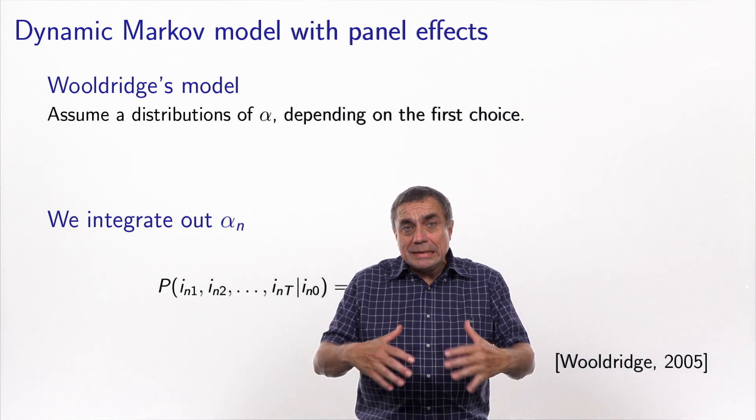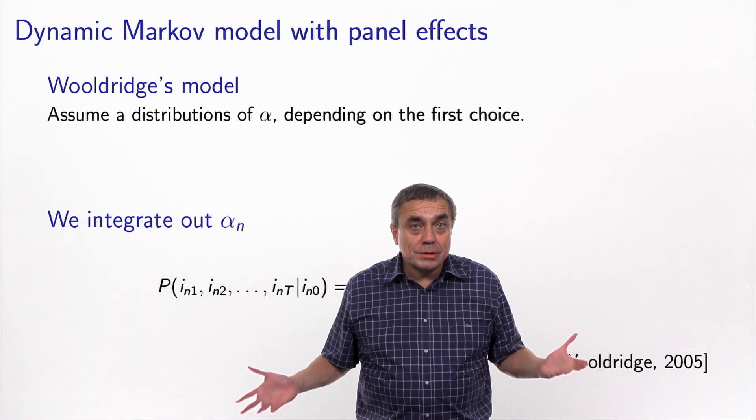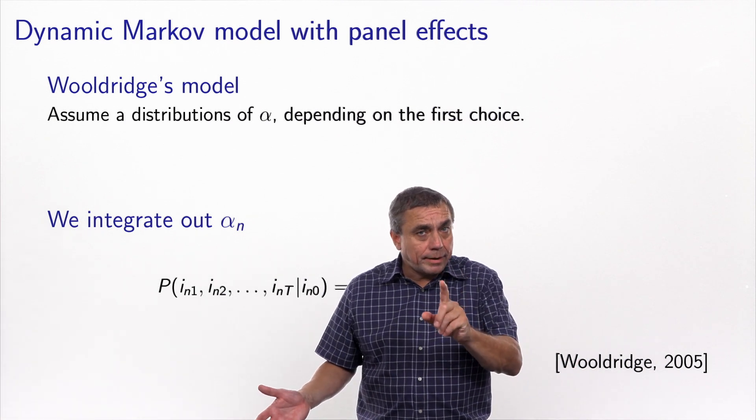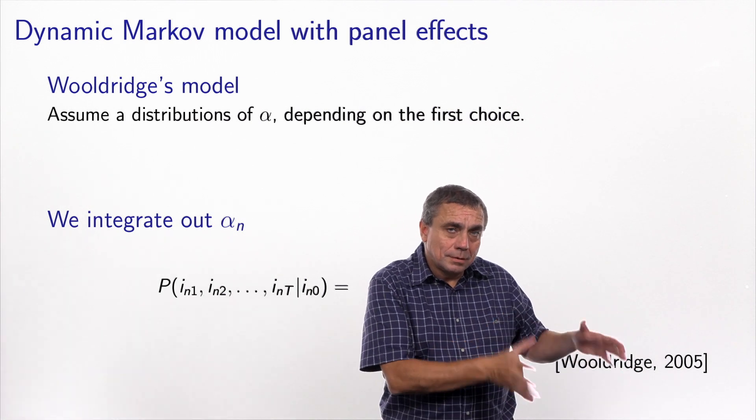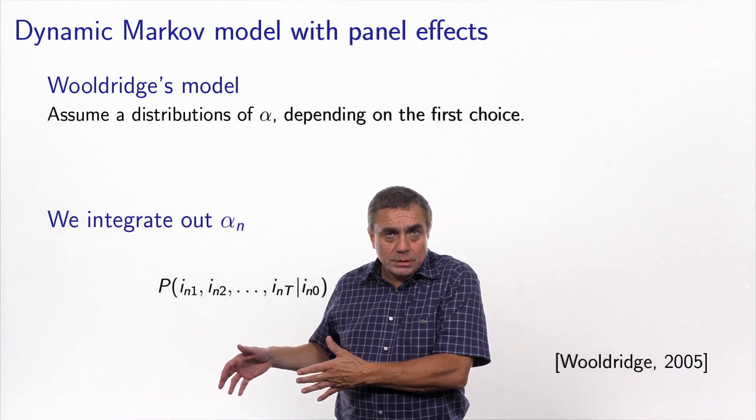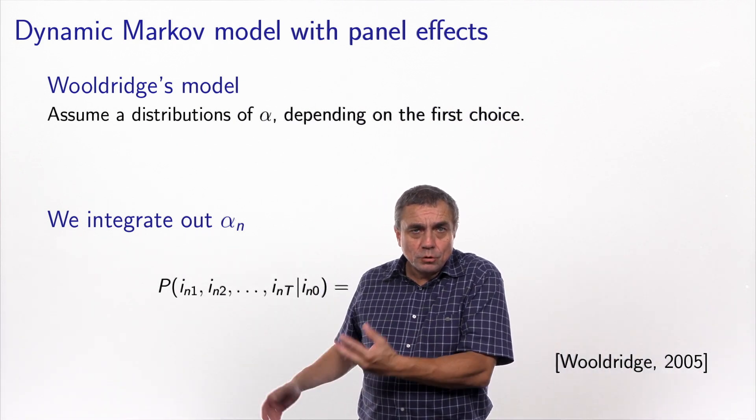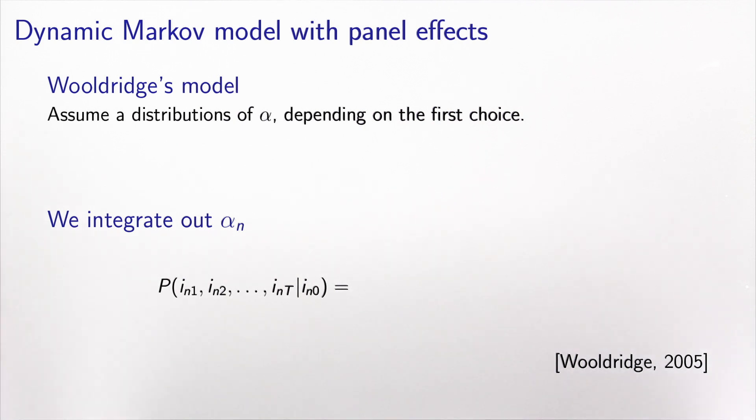So, the idea would be that, instead of assuming a distribution of alpha for the entire population, the same distribution for everybody, we will say, ha ha, people who chose cigarettes in the first time interval, they will have a distribution. People who didn't choose it will have another distribution. So somehow we will define a distribution of alpha conditional to the choice. That's what we write now, so the distribution that we will assume, we will say that the distribution of alpha will be conditional on the choice made during the first time interval.